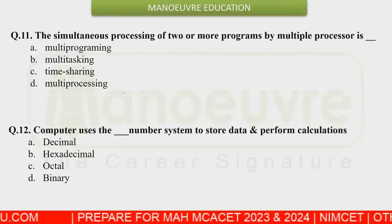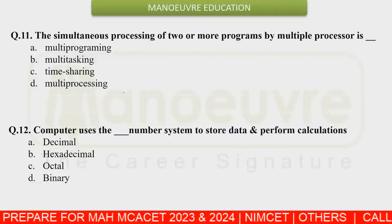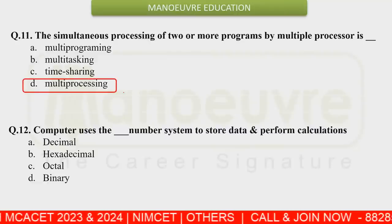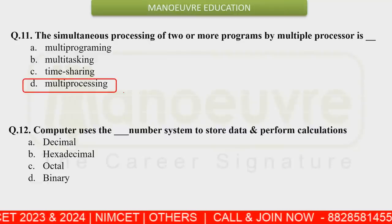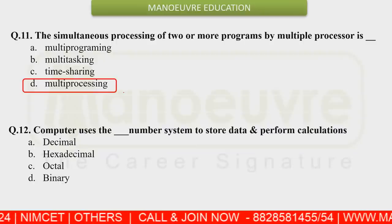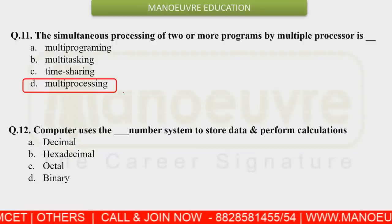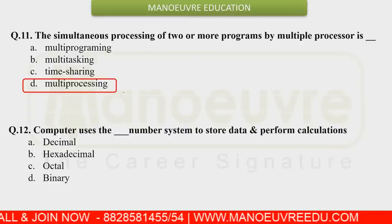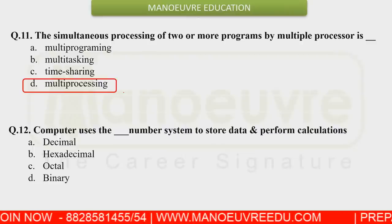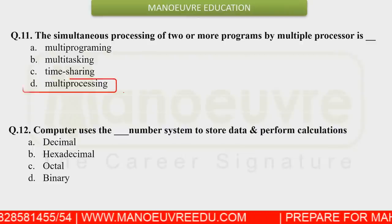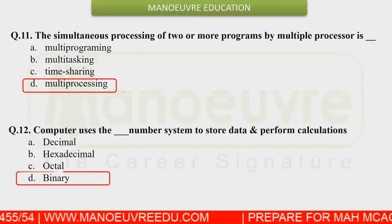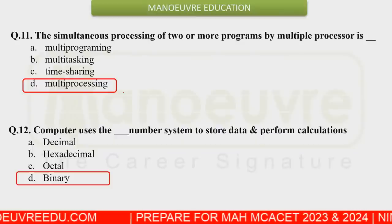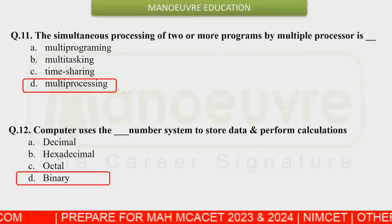Processing of two or more programs by multiple processors is called multiprocessing. A computer uses the binary number system to store data and perform calculations, because computers always utilize binary numbers internally.